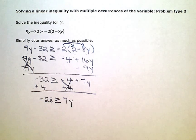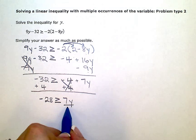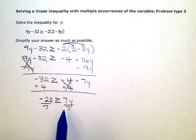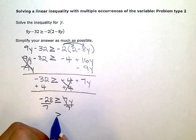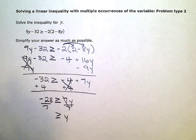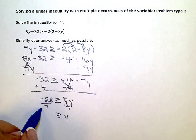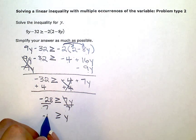My last step is going to be dividing by 7. I'm dividing by a positive number here, so I don't need to flip my inequality symbol. But when I simplify, I'm going to have y on the right and negative 28 divided by 7 is negative 4 on the left.